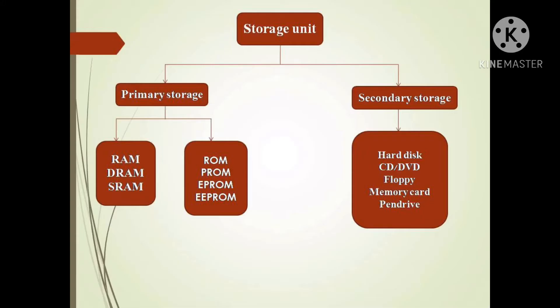Primary memory is divided into two types: RAM and ROM. RAM has different types — DRAM and SRAM. ROM has different types — PROM, EPROM, and EEPROM.